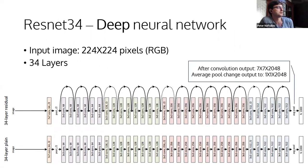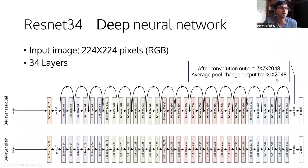The ResNet architecture uses skip connections every two convolutional layers — skipping across them preserves some gradient values and prevents them from diminishing to zero. The basic goal of ResNet is to classify a thousand different image classes, so the last layer has a 1,000-size output.